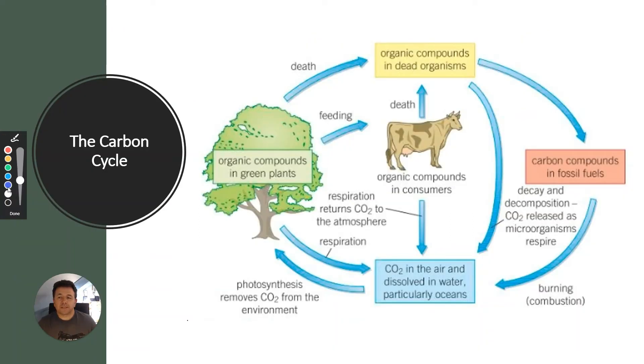This is a diagram of the carbon cycle. I'm just going to go briefly through it with you. The first place I'm going to start is here - CO2 in the air, dissolved in water and particularly the oceans. The main way that CO2 is going to be removed is via green plants.